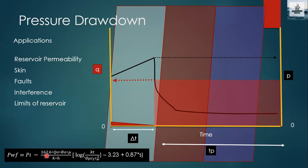In this equation: q_o represents flow rate of oil; B_o is formation volume factor of oil; μ is viscosity; k represents permeability; h represents thickness; t represents time, which can be either delta t or tp (production time). φ represents porosity; ct represents total compressibility; rw represents wellbore radius; and s represents skin effect.